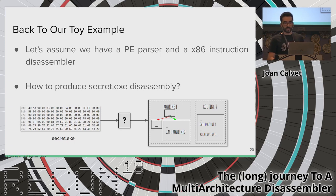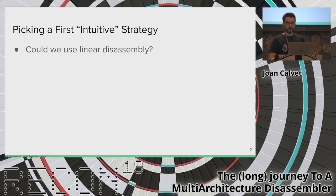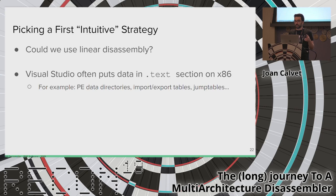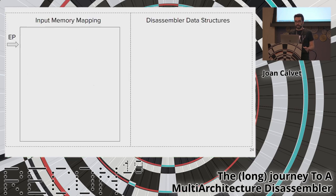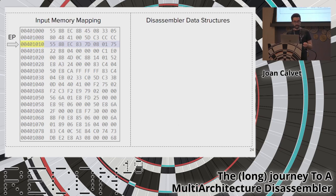Back to the toy example: we have a PE parser and an x86 instruction disassembler. We try the most basic approach: linear disassembly — disassembling every byte in the code section. However, Visual Studio often mixes data within the code section, like PE metadata, import/export tables, and switch jump tables. So recursive disassembly seems better: start from the entry point provided by the file parser and follow the code. Here are the memory mapping and bytes, with a pointer to the next instruction to disassemble initially set to the entry point.